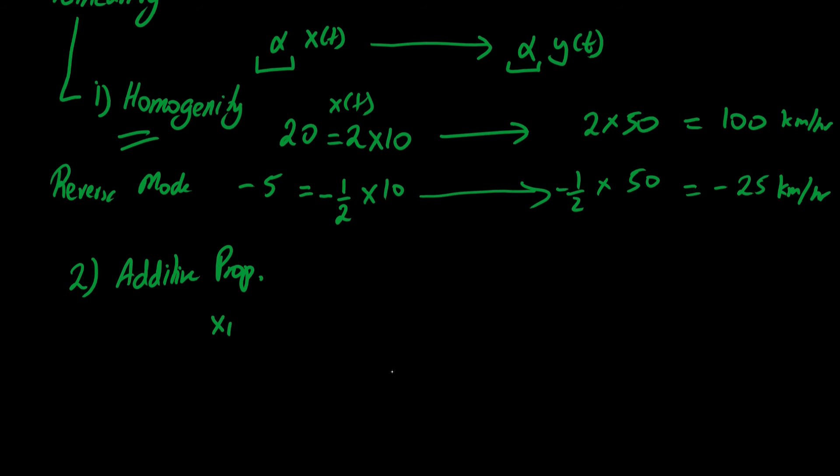The second property is additive property. This says that if we have two inputs, x₁(t) plus x₂(t), and if we pass it through a linear system, the output would be the transformation of each of these inputs, that is y₁(t) plus y₂(t). So we have a summation at the output and each term of the output in the summation relates with its particular input term.